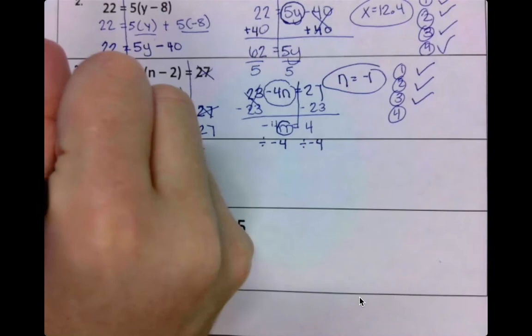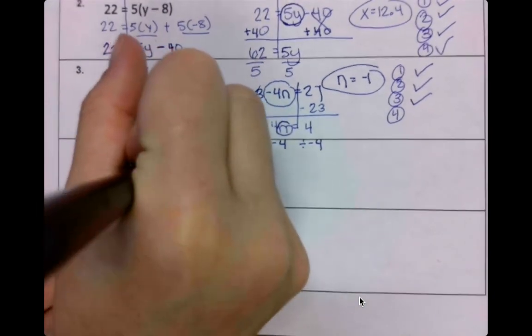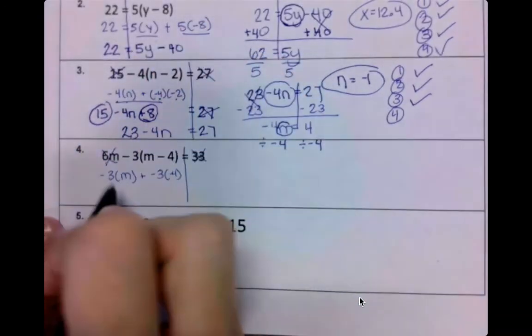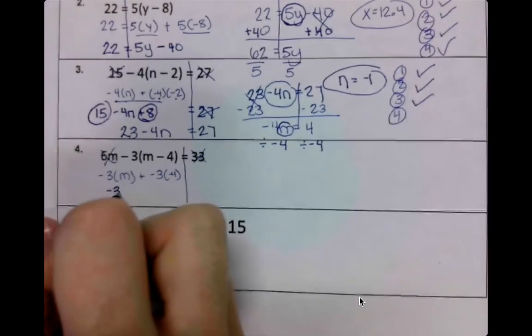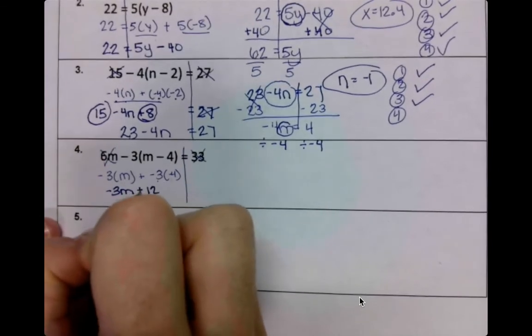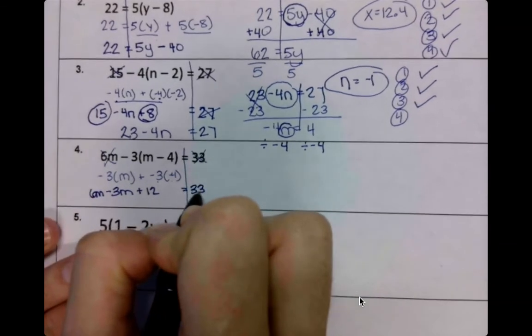That doesn't go. That doesn't go. So we have -3 and an m, plus -3 and a -4. That makes it -3m. 3 times 4 is 12, that's going to be a positive. Bring down my 6m. Bring down my 33.